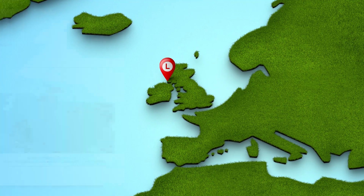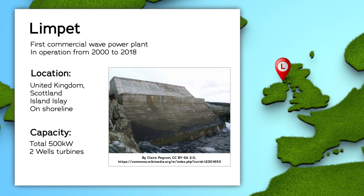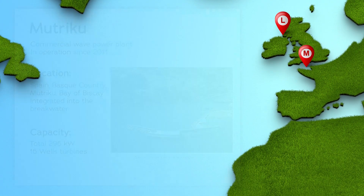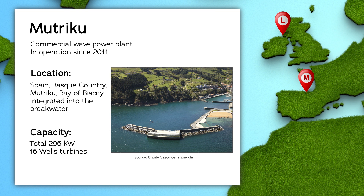The power plant on the Isle of Islay was the first commercial plant in operation between the year 2000 and 2018. It generated 500 kilowatts with two Wells turbines. The Mutriku breakwater wave plant in the Bay of Biscay on the coast of the Basque Country in Spain started in 2011. It has 16 Wells turbines and supplies 250 households with energy.